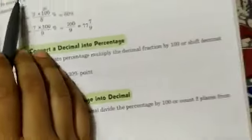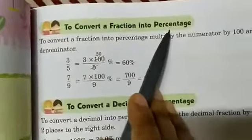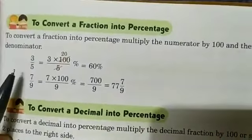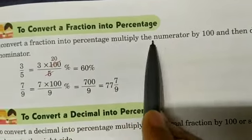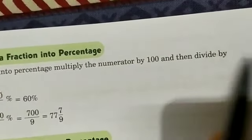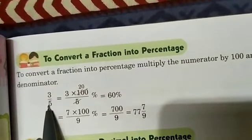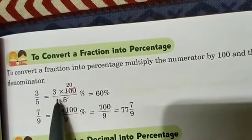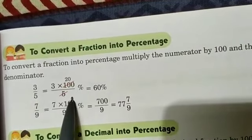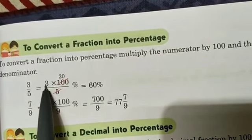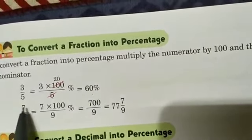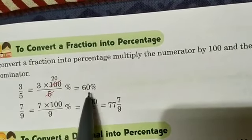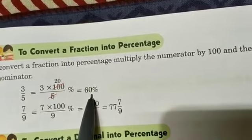The second topic is how to convert a fraction into percentage. This number is given in fraction form and we have to convert it into percentage. To convert a fraction into percentage, multiply the numerator by 100 and then divide by the denominator. So for 3 by 5: 3 into 100 divided by 5 — 5 goes into 100 twenty times — so 3 into 20 equals 60. The answer is 60 percent.